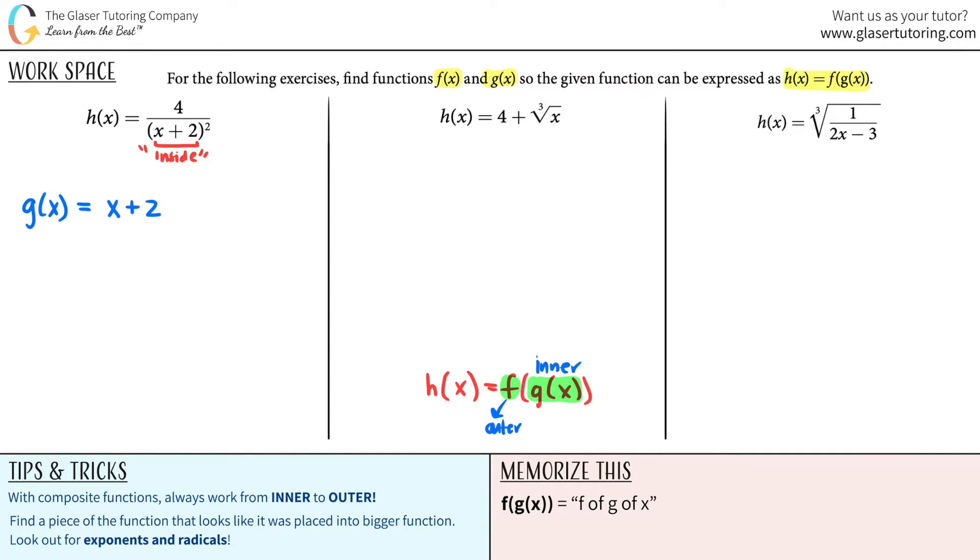Now comes the easy part. For the outer function, which they wanted as f of x, all you got to do is just rewrite the main function. So I'm just going to do that for you guys here. And in your mind, I mean, you don't really have to do this on paper, but maybe starting off, you might want to. But what you're doing is you're going to erase everything that you stated that was the inner function.